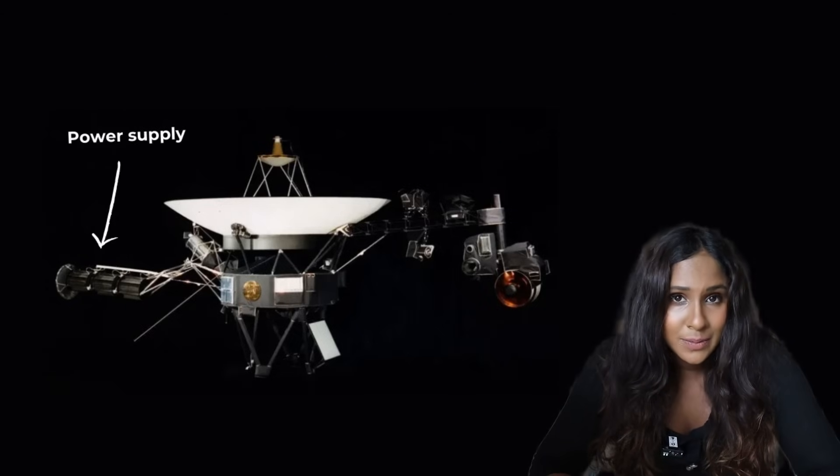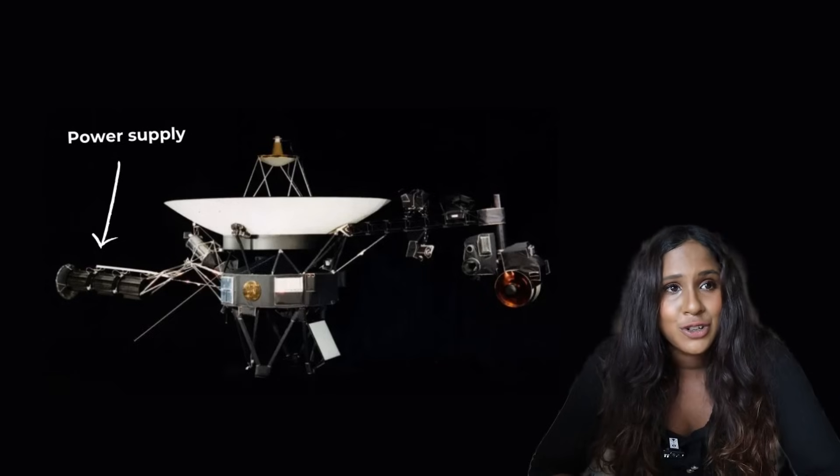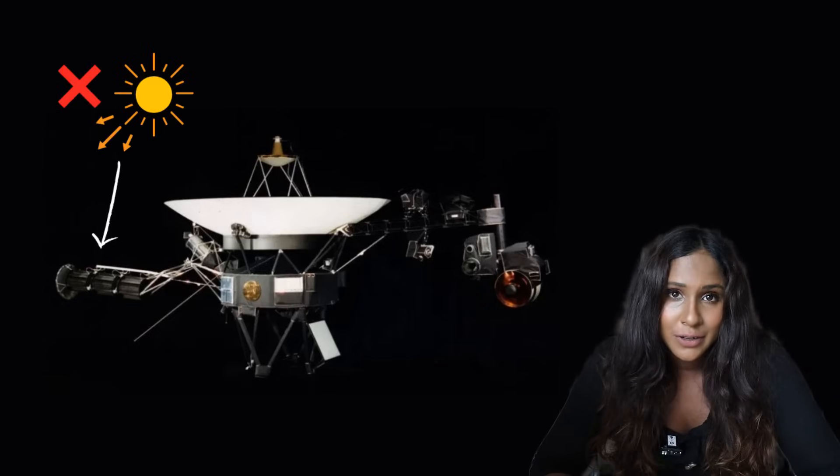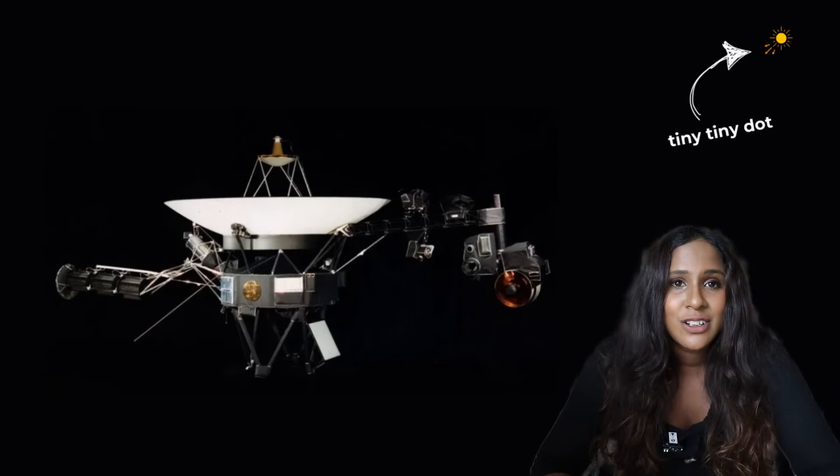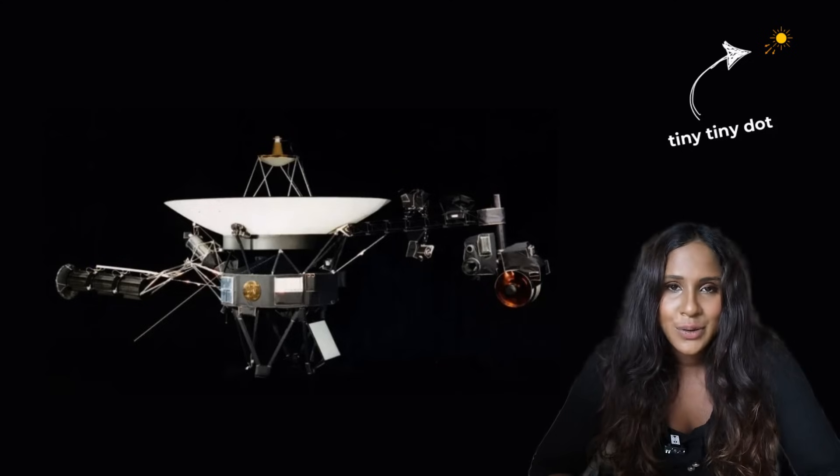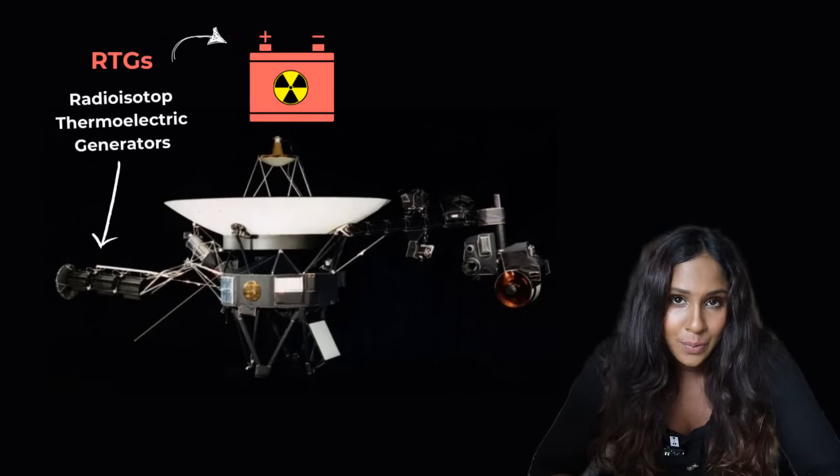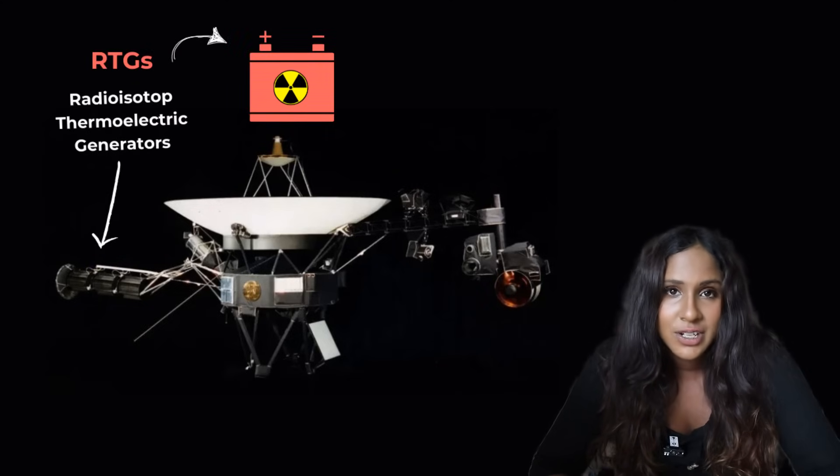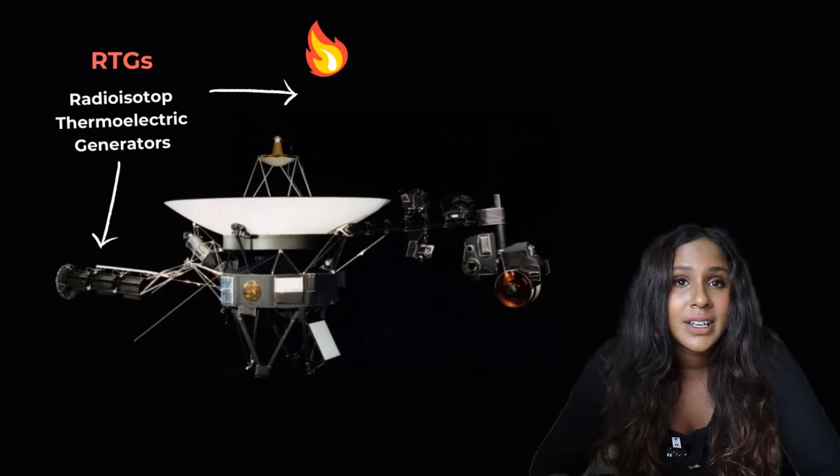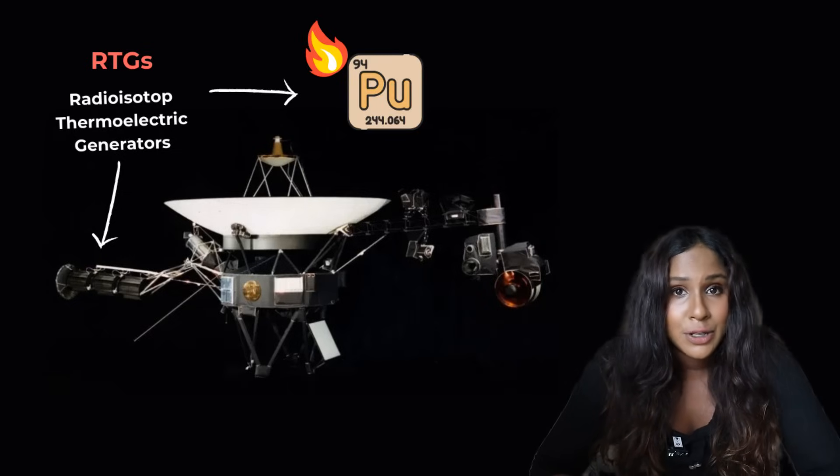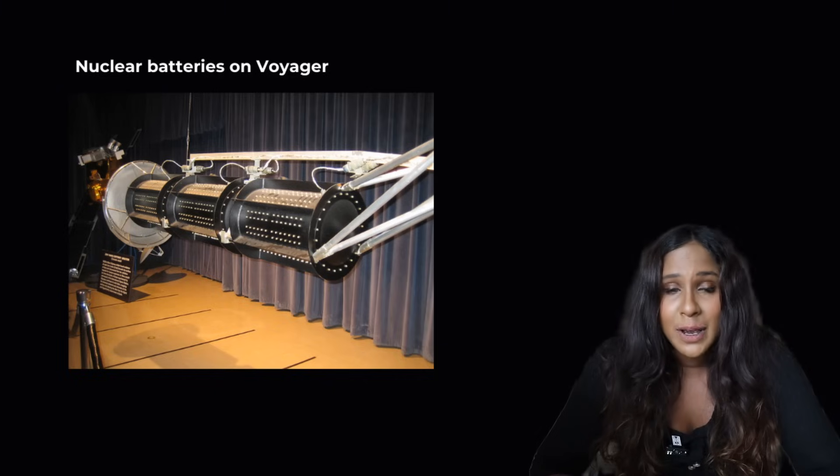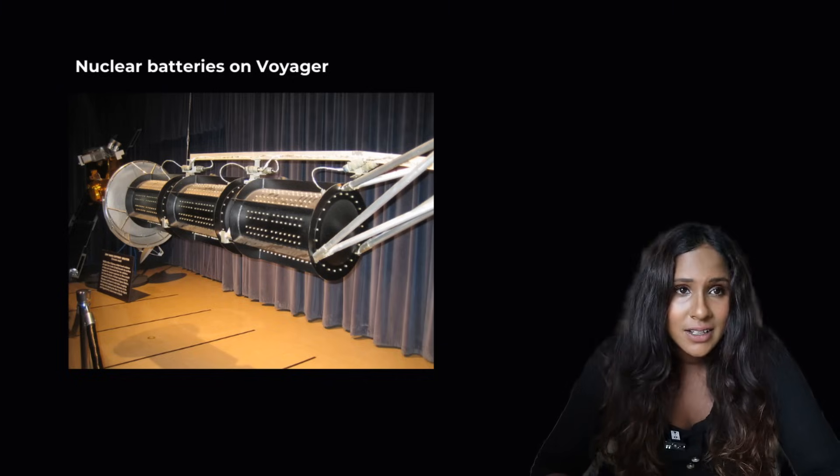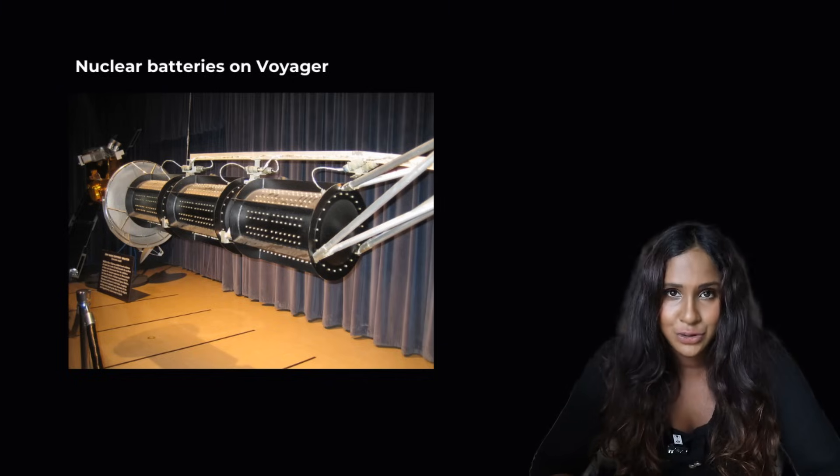In terms of power supply or batteries, Voyager 1 actually doesn't use solar panels, because the sun is just a tiny dot from where it is now. So it's powered by radioisotope thermoelectric generators, known as RTGs. They are nuclear batteries and they basically convert the heat from the decaying plutonium to power. These batteries were designed to last decades. They are slowly running out of juice.